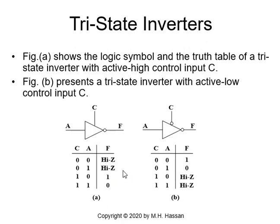Figure B presents a Tri-State Inverter with active low control signal. If C is active low (zero), F will be the complement of A — F will be one if A is zero, and F will be zero if A is one. But if C is inactive (one), F will be placed on high impedance, high Z.